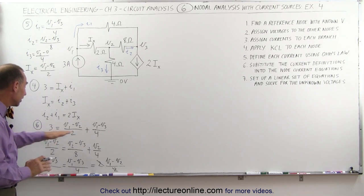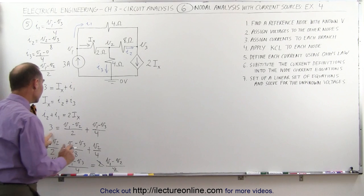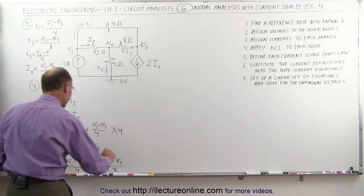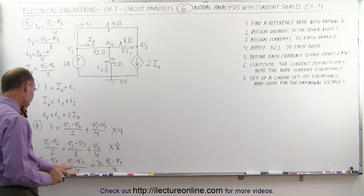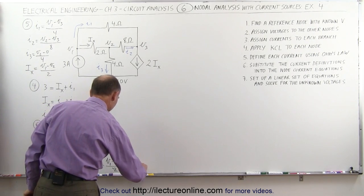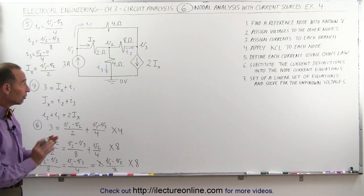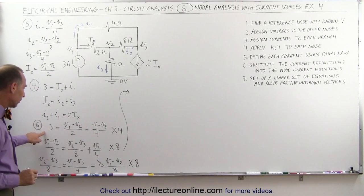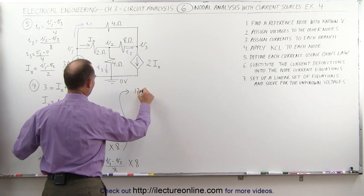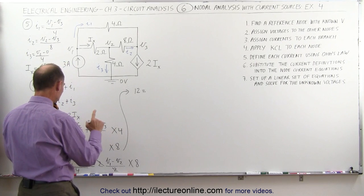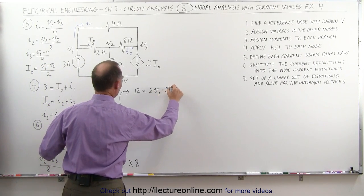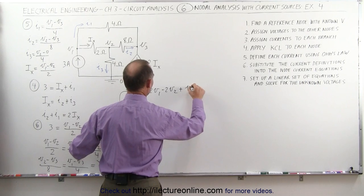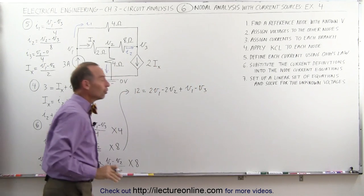To clean up the equations, we get rid of all denominators by multiplying: the top equation by 4, the second equation by 8, and the third equation by 8. For the first equation, multiplying by 4 gives: 12 equals 2V1 minus 2V2, and since 4 divided by 4 is 1, we also get plus V1 minus V3. The first equation now has no denominators.